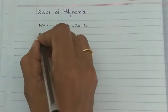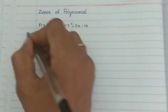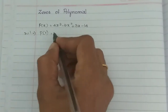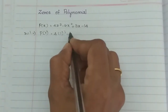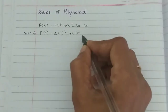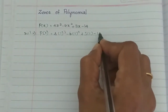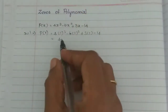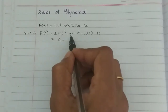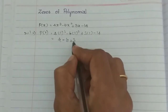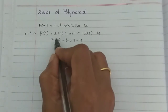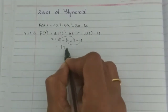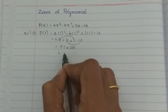For example, let x equal to 1 and substitute x equal to 1: p of 1 equals 4 into 1 cube minus 6 into 1 square plus 3 into 1 minus 14. Then 4 into 1 is 4, minus 6 into 1 is 6, plus 3, minus 14. So 4 plus 3 is 7, minus 6 is 1, minus 14 gives minus 13. So p of 1 is not equal to 0.